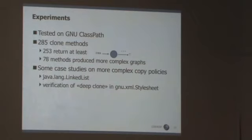And what's more interesting is that for 78 of these methods, they actually produce more complex graphs, and we are in the process of understanding what they found there. But it just means that the information is correct, but it shows also they can say more than just the basic cloning policy. So that's launching the analyzer on something that's existing, and then we have also done some case studies where you annotate with more complex policies and you verify these things, in particular this application for the GNU XML style sheet.